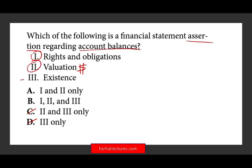Now all we have to find out is whether existence also deals with account balances. What is existence? Think of the word — does something exist? Existence means you're claiming you have an asset and I want to see if it exists; I want to inspect it physically. For intangible assets you have to figure out how to confirm they exist. Existence deals with overstatement — if it doesn't exist and you're reporting it, then it's an issue. So all three deal with account balances, and the answer is B.